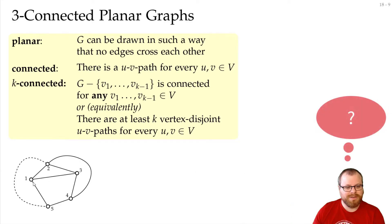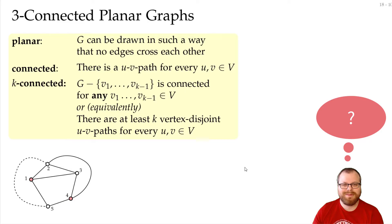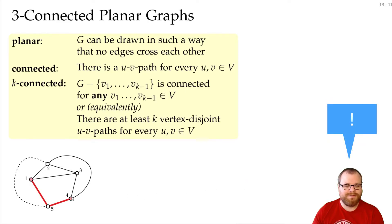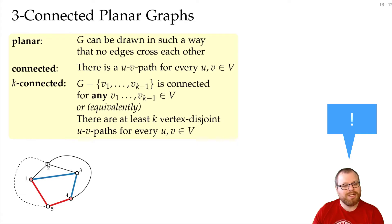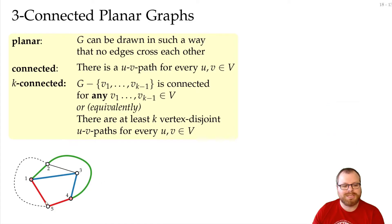Let's look at vertices 1 and 4 again. Can you find three vertex disjoint paths between them? Well, we can take the path via 5, we can take the path via 3, and then there is only one edge left, so we have to go to 2 and then via this edge to 4. So we have three vertex disjoint paths — there is no vertex except 1 and 4 that lies on two of them.